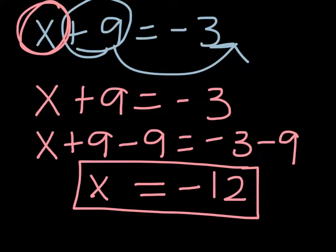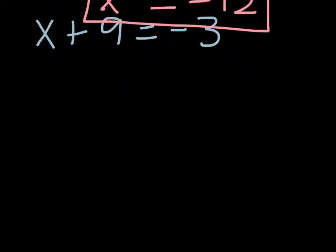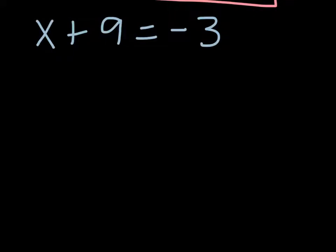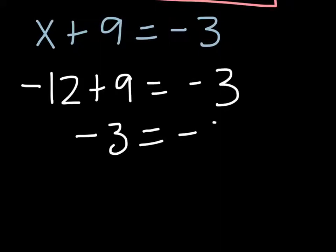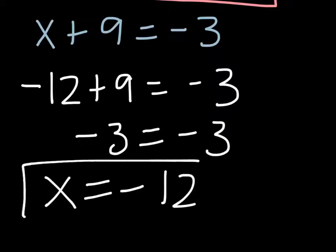We can check for reasonability of our answer by simply reinserting the number that we solved for. So negative 12 plus 9 equals negative 3. Negative 12 plus 9 would be negative 3 equals negative 3. So our x equals negative 12 was the correct answer.